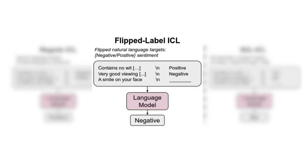Flip-labeled ICL, where the example of the opposite meaning they should have, and finally, semantically unrelated target, which means that the elements have no connection between the input and the output. For instance, in a sentiment analysis task, positive might be replaced by apple and negative might be replaced by oranges. So we changed the output distribution here.